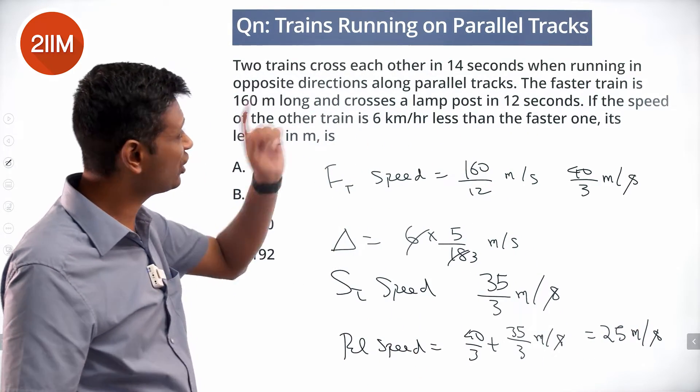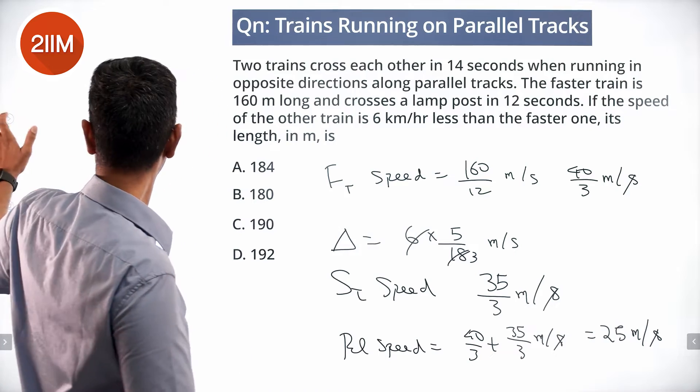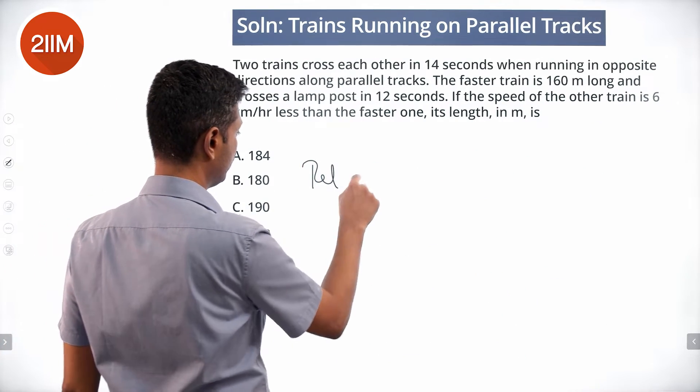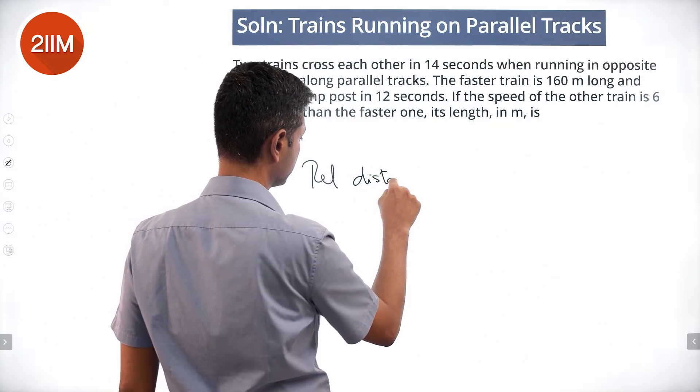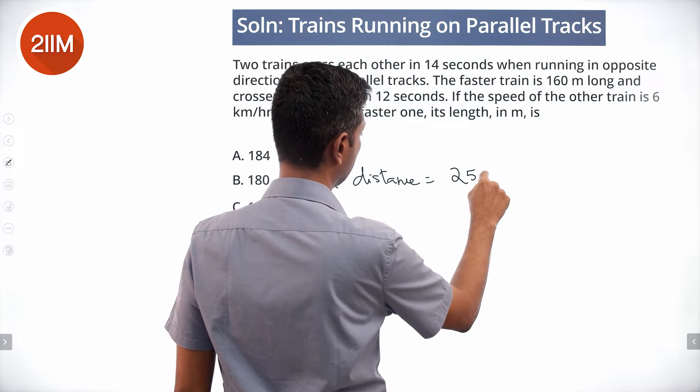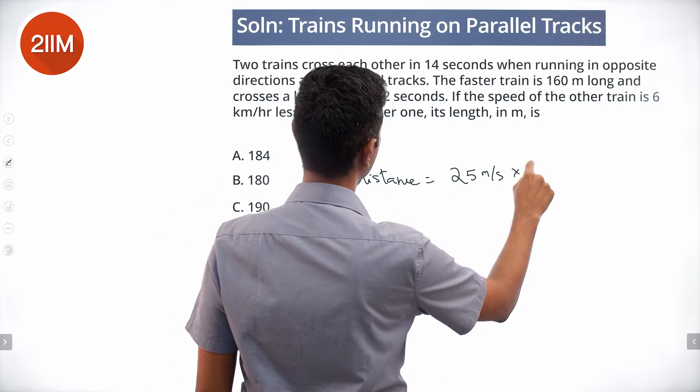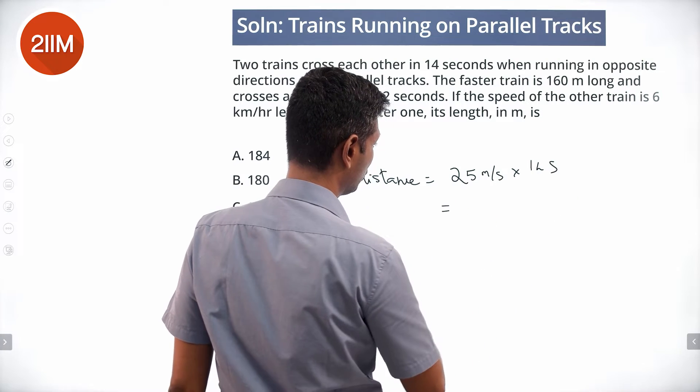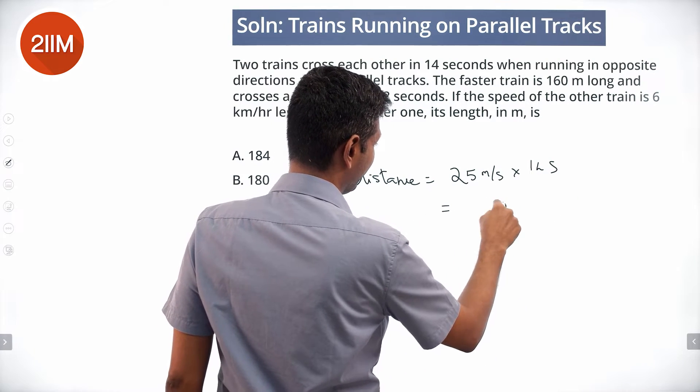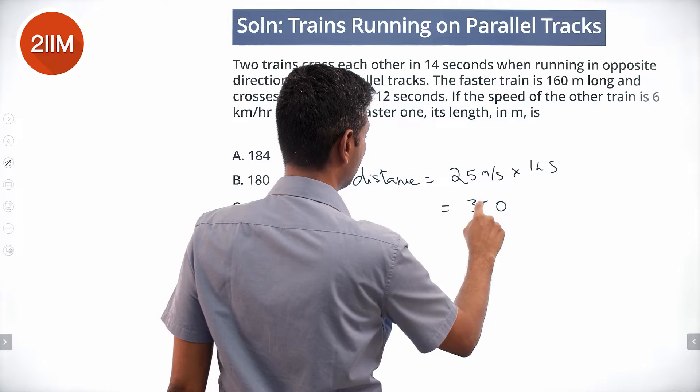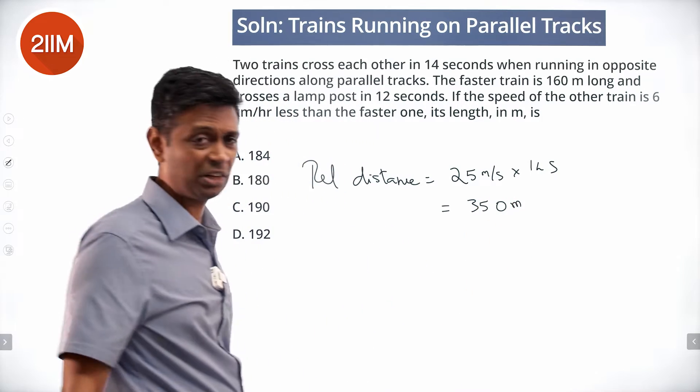They take 14 seconds to cross each other, so relative distance is 25 meters per second into 14 seconds. 25 into 14 equals 350 meters. The relative distance is 350 meters.